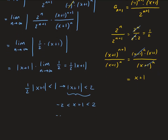From |x+1| < 2, this is the same as -2 < x+1 < 2. Subtracting one from all parts, we get -3 < x < 1. So this is our interval, but we still need to check the endpoints.